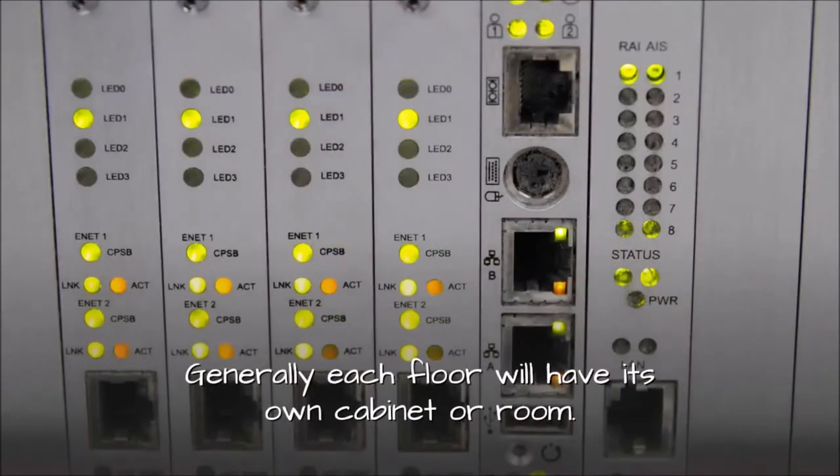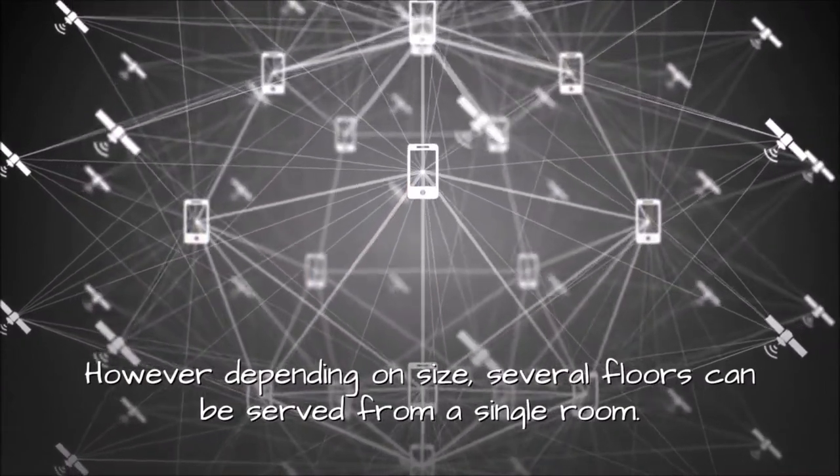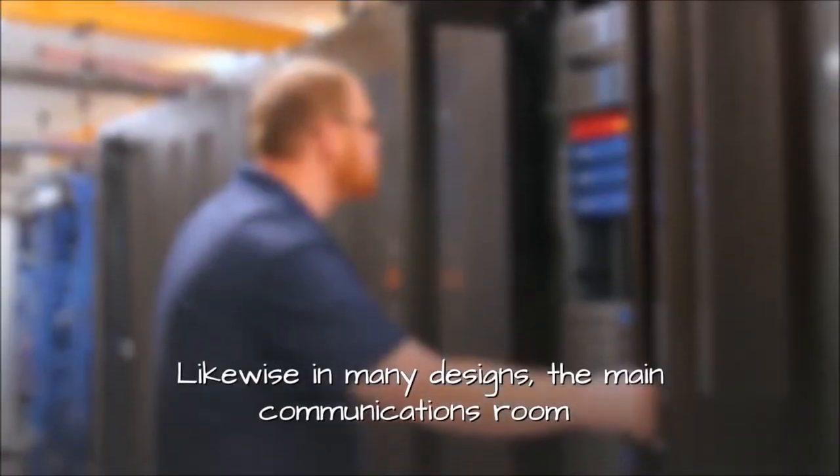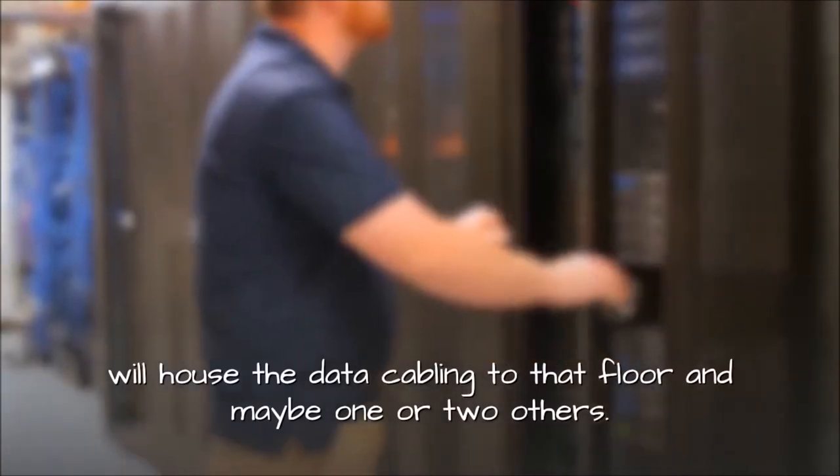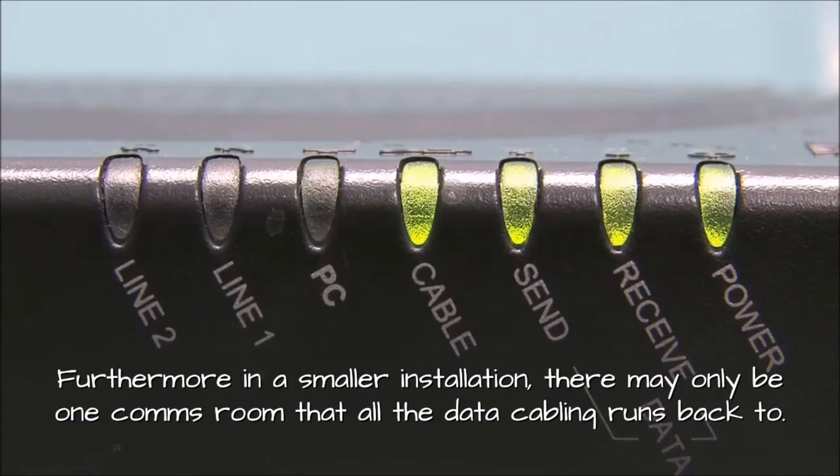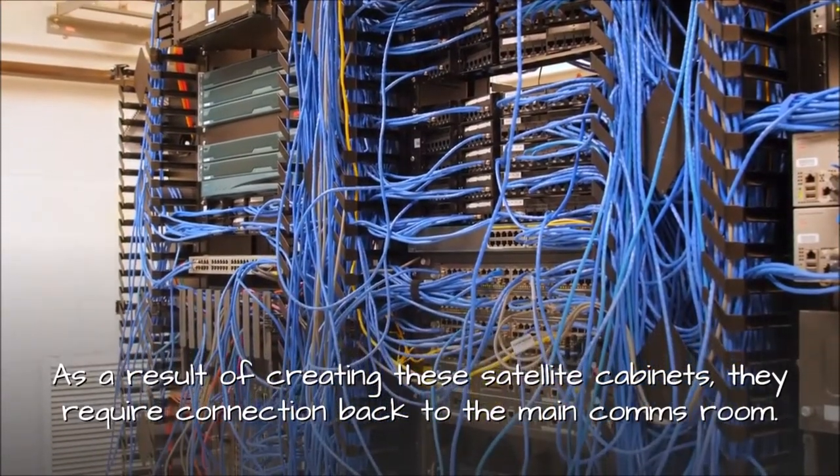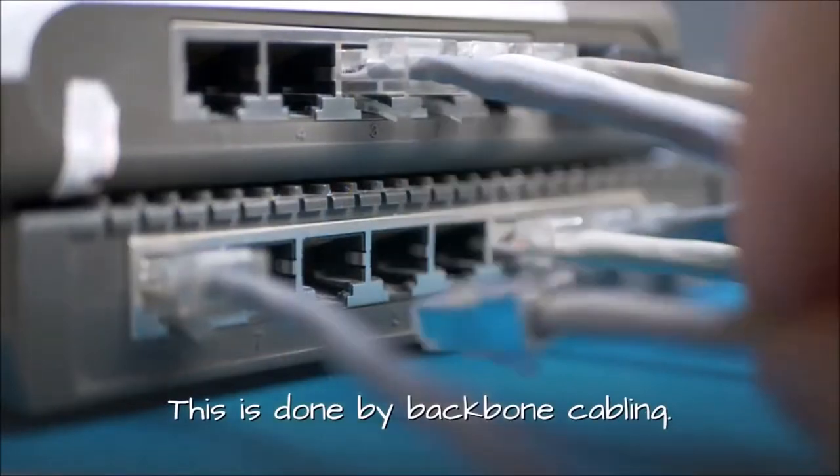Generally each floor will have its own cabinet or room. However depending on size, several floors can be served from a single room. Likewise in many designs, the main communications room will house the data cabling to that floor and maybe one or two others. Furthermore in a smaller installation, there may only be one comms room that all the data cabling runs back to. As a result of creating these satellite cabinets, they require connection back to the main comms room. This is done by backbone cabling.